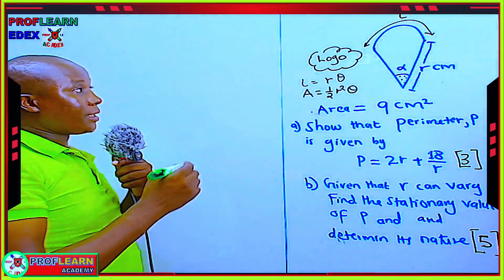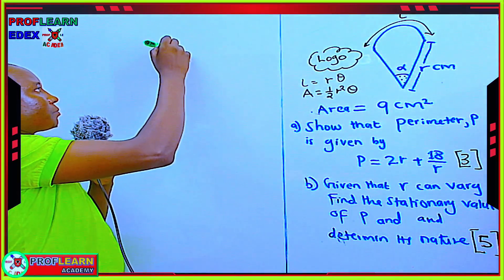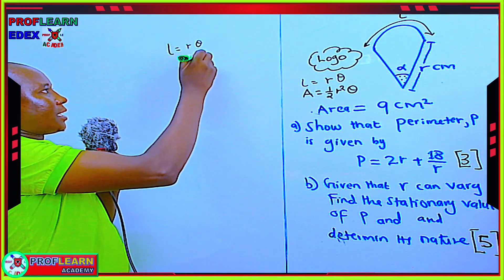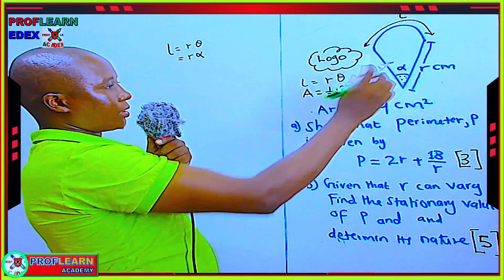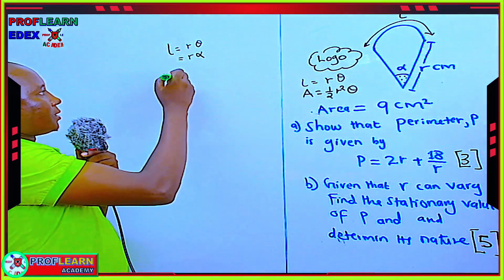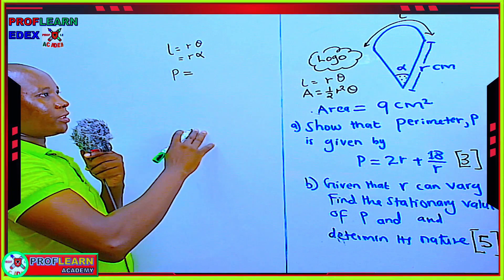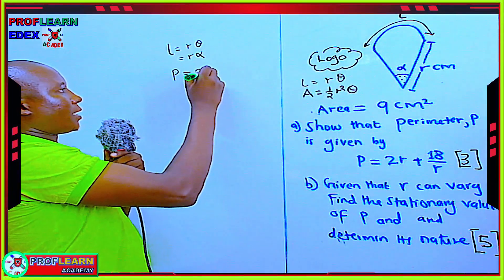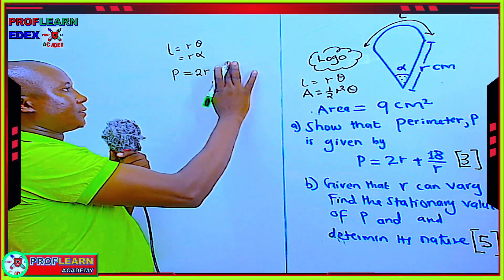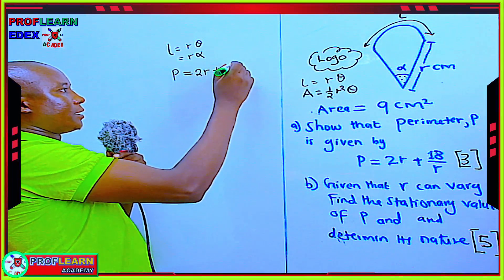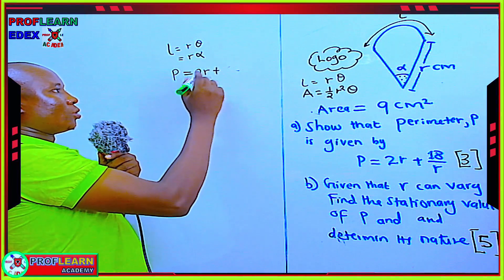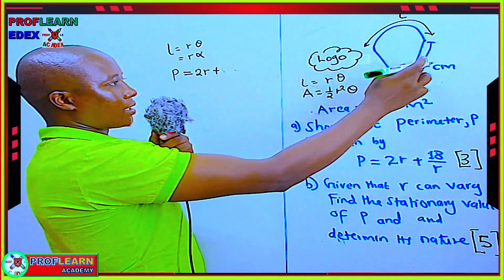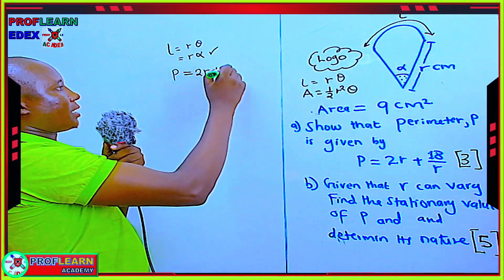Now let's work it out. We know that arc length L equals R theta — in this case it's R alpha, because the angle was given as alpha. Perimeter is going to be equivalent to arc length L plus 2R. So we are going to say 2R — this radius and this radius — plus L, but L is R alpha.